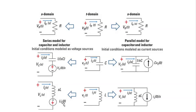Or if you want a parallel mode circuit model using source transformation, you can model the inductor with initial condition with an inductor without initial condition in parallel with a current source with the value of I_L₀/s.